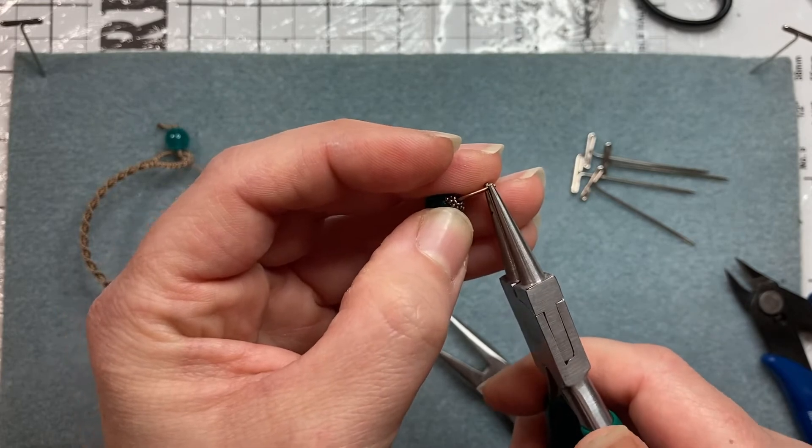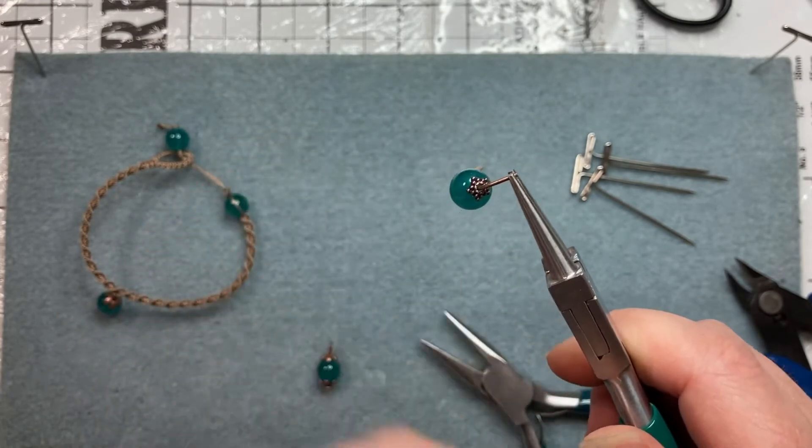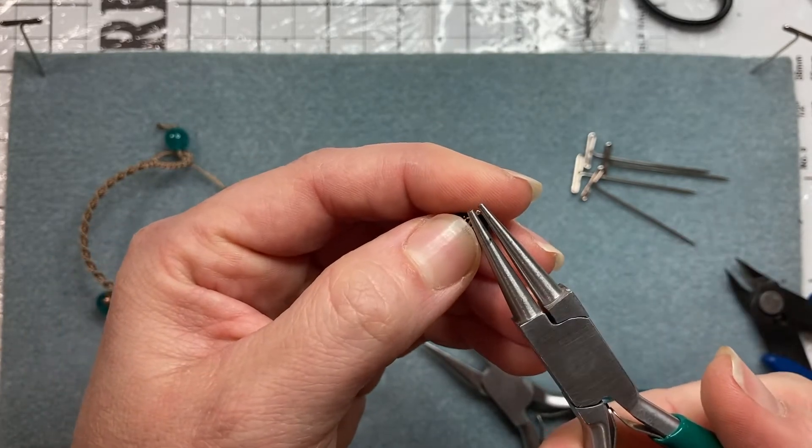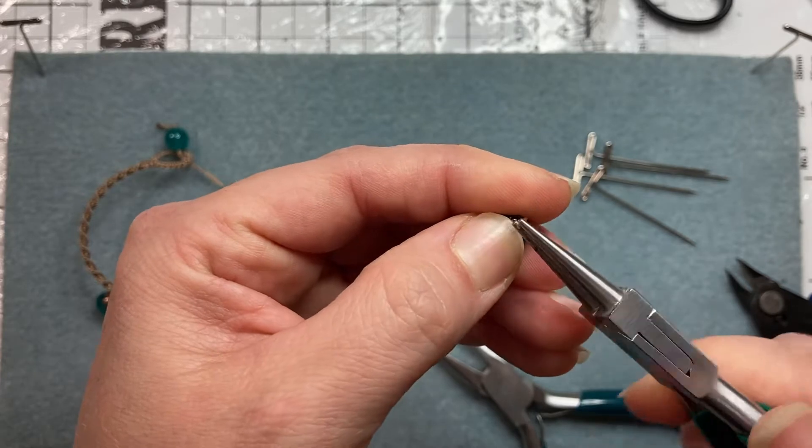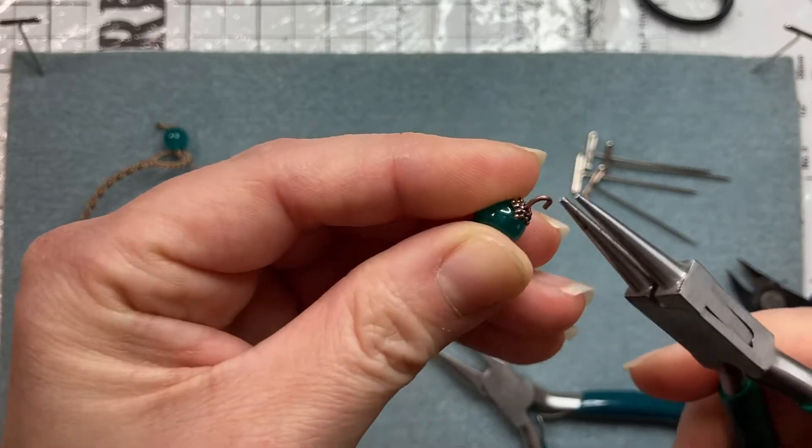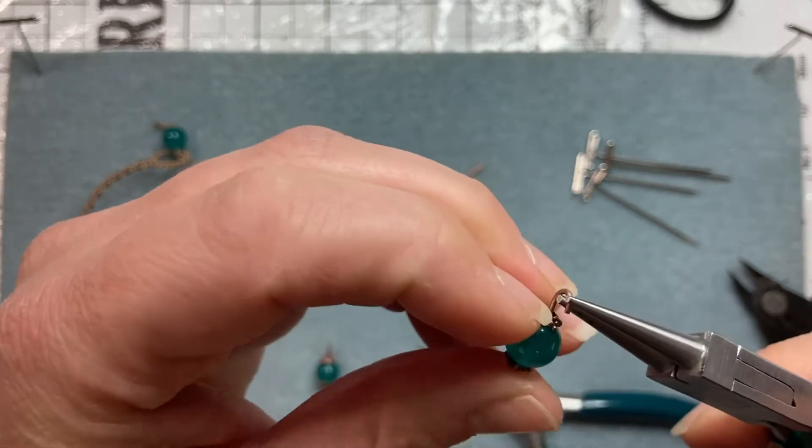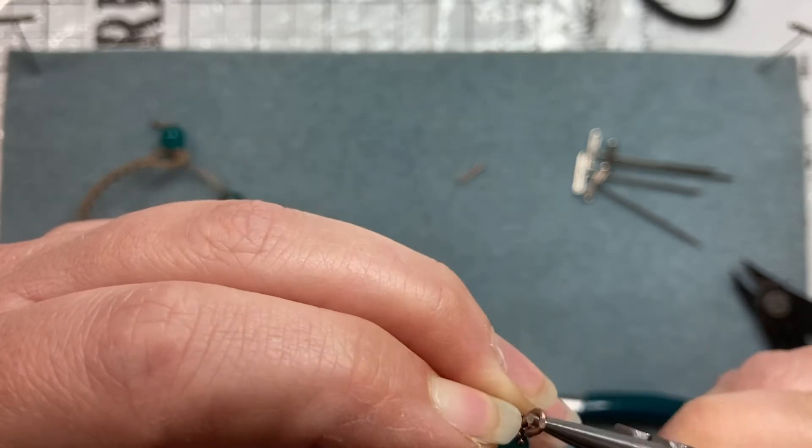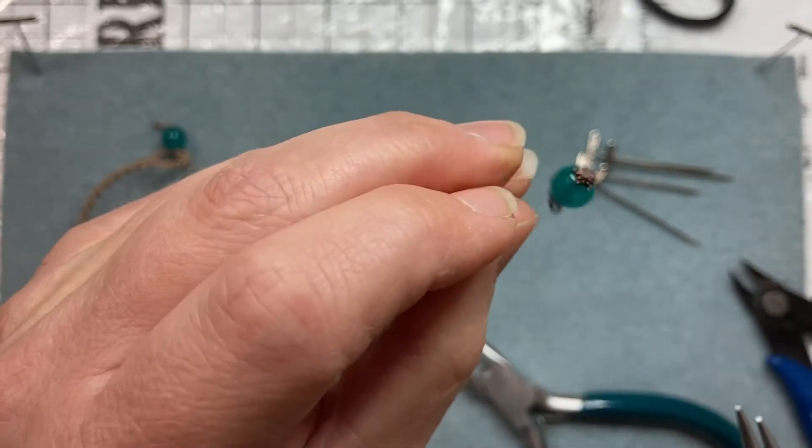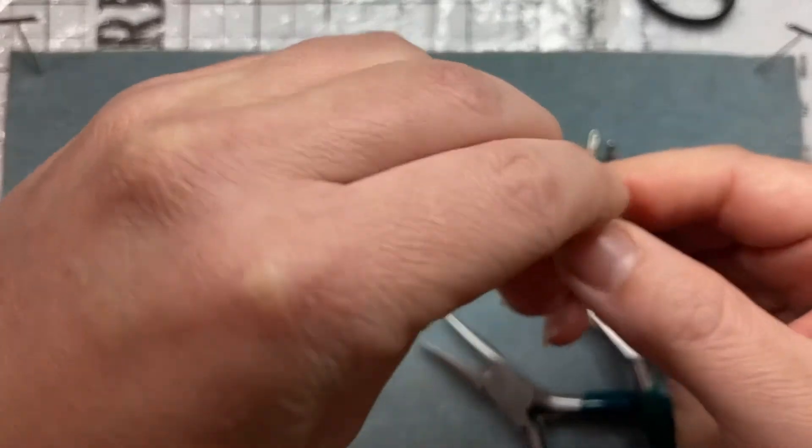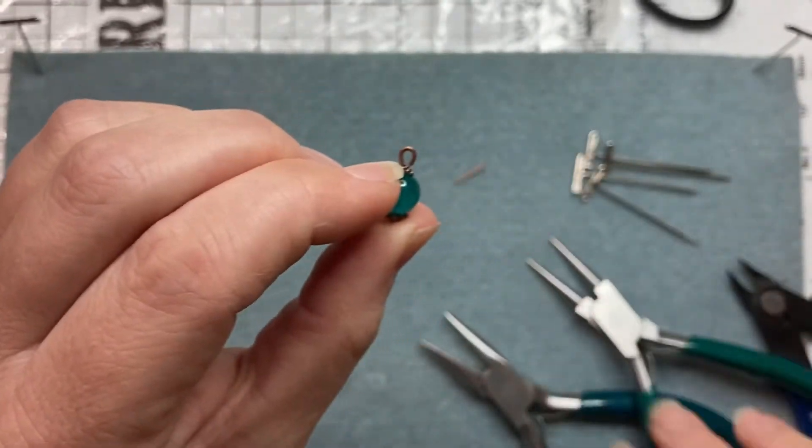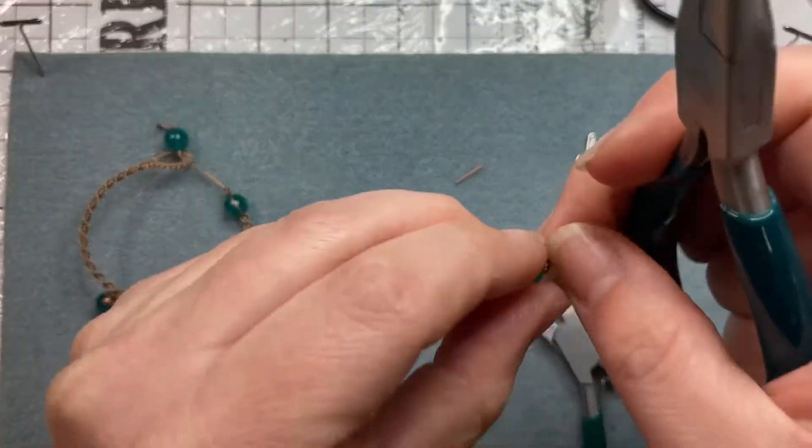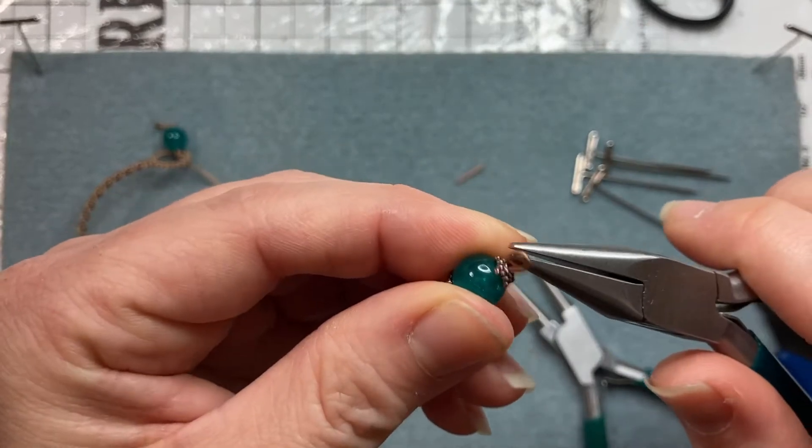Then you're going to take your needle nose pliers like so at the very tip of it and just slowly work this into a circle here. There we go.